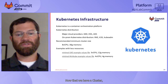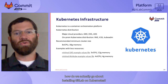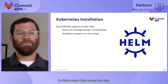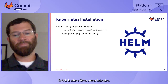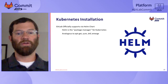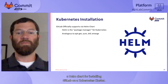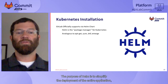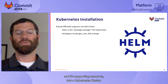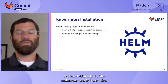Now that we have a cluster, how do we actually go about installing GitLab on Kubernetes? This is where Helm comes into play. GitLab officially supports and distributes a Helm chart for installing GitLab on a Kubernetes cluster. The purpose of Helm is to simplify the deployment of the entire application and its supporting resources into a Kubernetes cluster. Think of Helm as the package manager for Kubernetes.